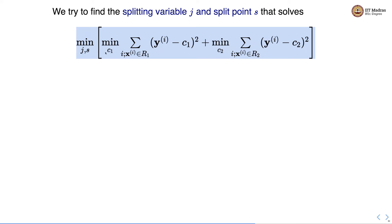So we have to select the value for the label c1 in region R1 such that the sum of squared error is minimized for region R1 and same thing we do in region R2 with respect to the value c2.